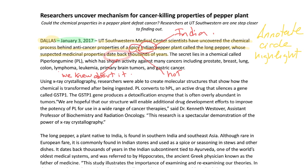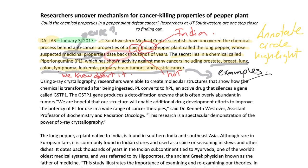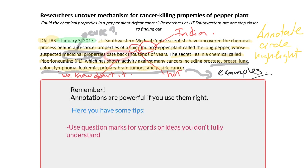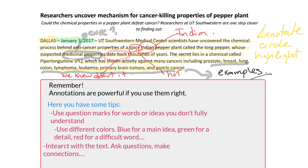What do medicinal properties mean? It means it may be able to cure diseases. More information: "The secret lies in a chemical called piperlongomine (PL), which has shown activity against many cancers, including prostate, breast, lung, colon, lymphoma, leukemia, primary brain tumors, and gastric cancer." I'm going to annotate that these are examples of cancer, and that this chemical has shown activity against them — meaning it has shown it can fight those cancers. You will keep reading the article doing the same annotations I modeled.